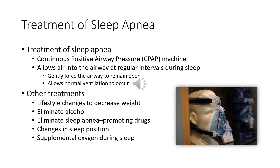Other treatments include lifestyle changes to decrease weight, since obesity plays a role in obstructive sleep apnea. We also need to eliminate alcohol or drugs such as opioids that may be suppressing breathing. Changing sleep position — sleeping on your side instead of your back — can prevent neck tissue from narrowing the airway. Supplemental oxygen may also be used during sleep to boost oxygen saturation. Here we see the CPAP machine in the picture, which is the most commonly used treatment.